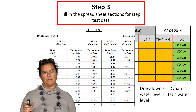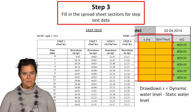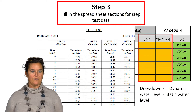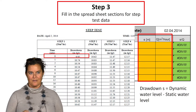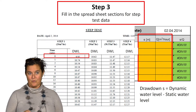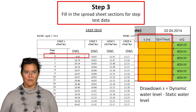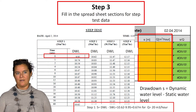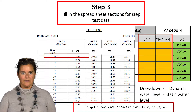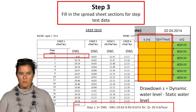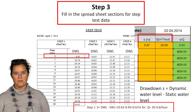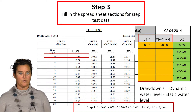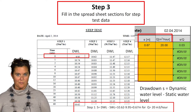If you find in the borehole completion report that at time 0 the drawdown is not 0, then you're actually dealing with the dynamic water level rather than the drawdown. So we're going to replace the headings of the different columns with the dynamic water level rather than drawdown. For Step 1, the drawdown will be the dynamic water level at time 60 minus the dynamic water level at time 0, giving 0.67 meters of drawdown for a pumping rate of 20 cubic meters per hour.